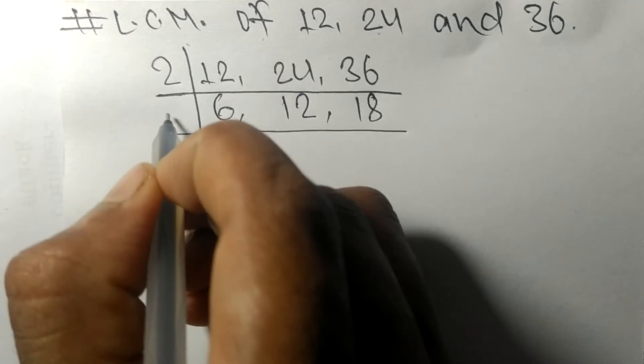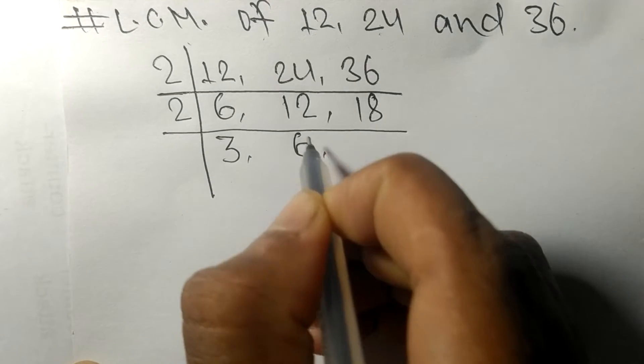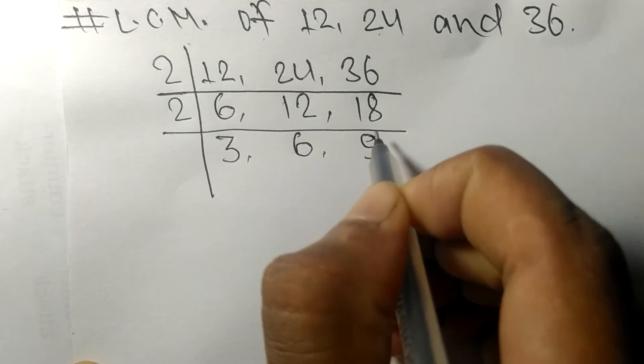So again it is divisible by 2. 2 times 3 means 6, 2 times 6 means 12, 2 times 9 means 18.